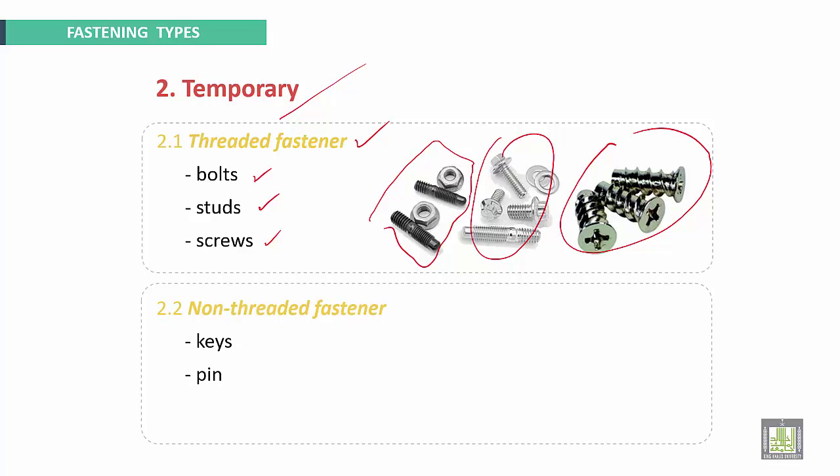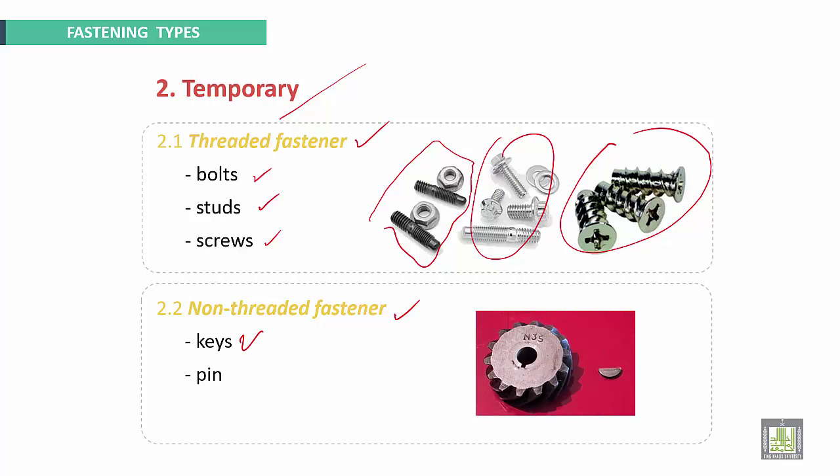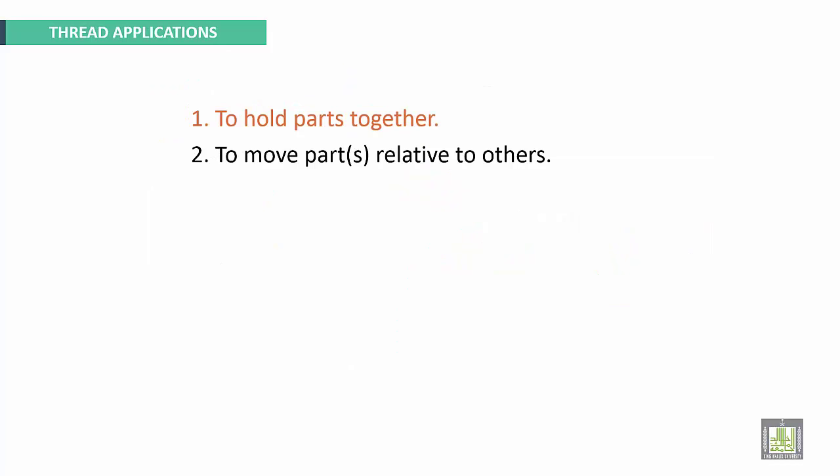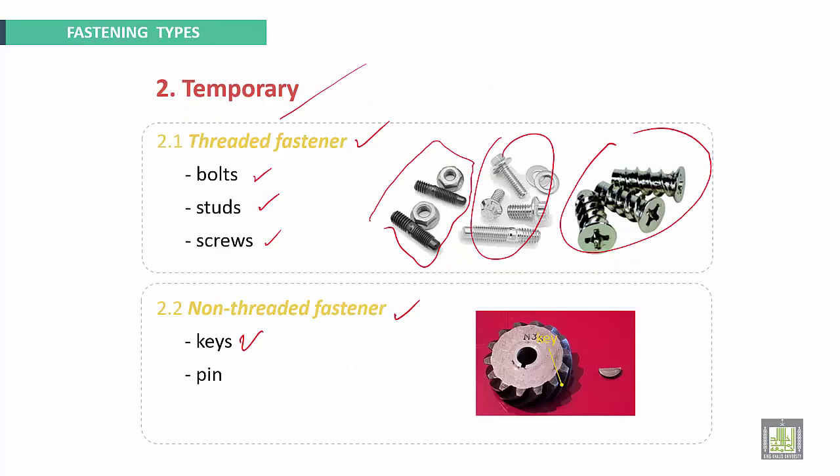The second type is non-threaded fasteners, such as keys and pins. This is one example of keys.